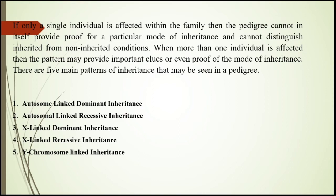To determine the type of inheritance, one must have data of up to three generations or more to prepare a pedigree chart and give the type of inheritance. There are generally five major types we are going to discuss today: autosomal dominant inheritance, autosomal recessive inheritance, X-linked dominant inheritance, X-linked recessive inheritance, and Y-chromosome linked inheritance.